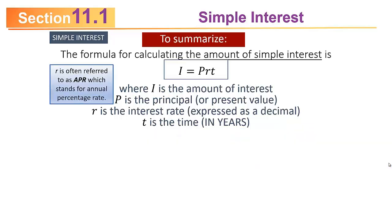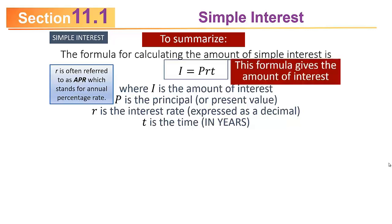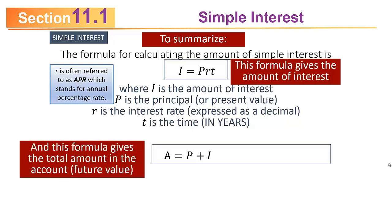Just to summarize: the formula for calculating the amount of simple interest is I = PRT, where I, P, R, and T are as defined earlier. That gives you the amount of interest. If I want to know how much is actually in the account, I'll call that capital A — the future value — which is simply the principal plus the interest.